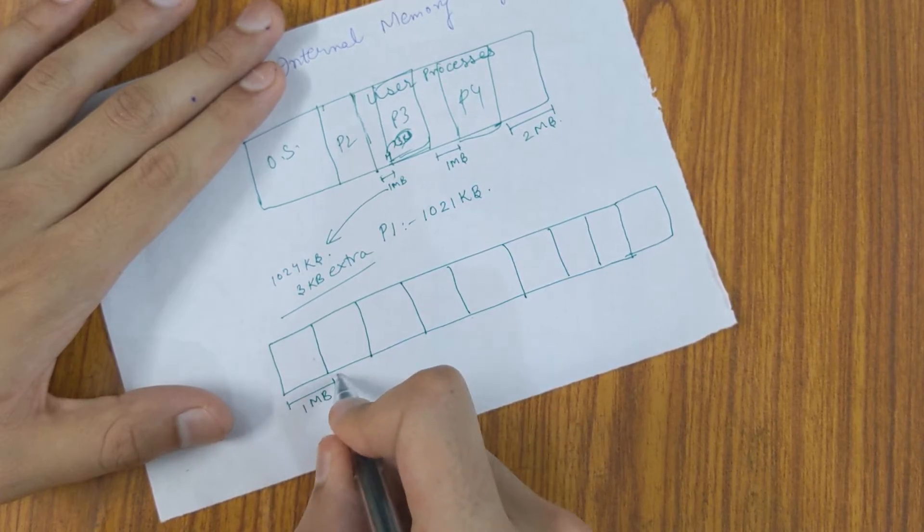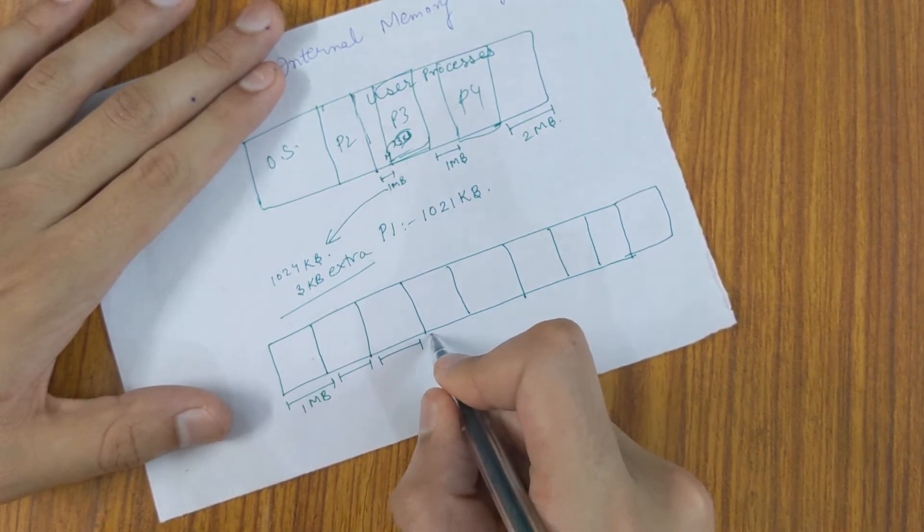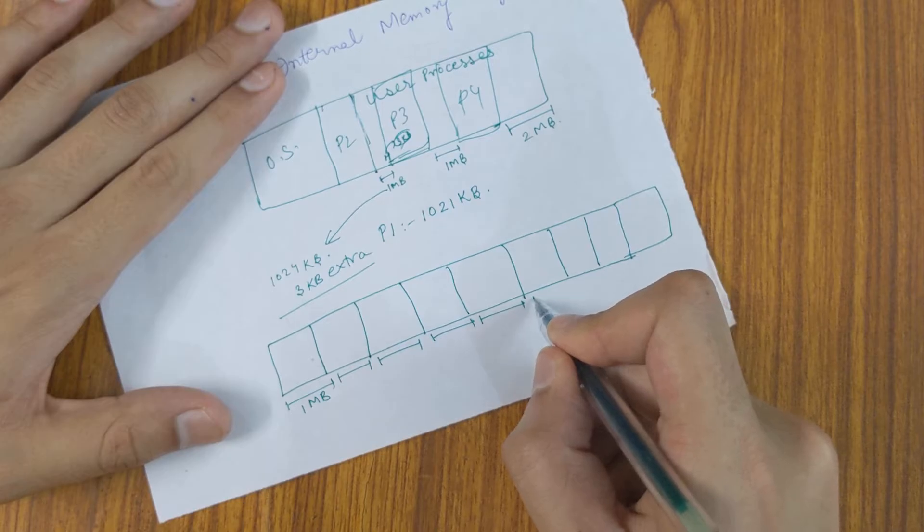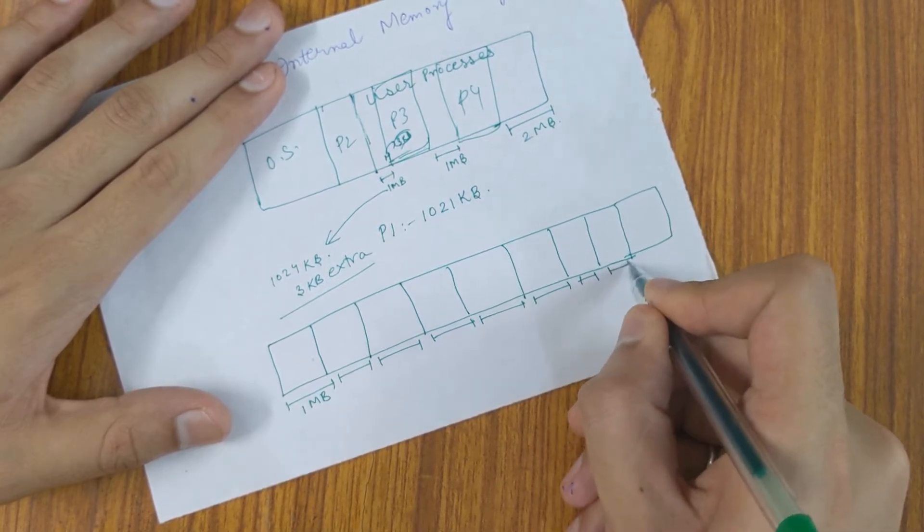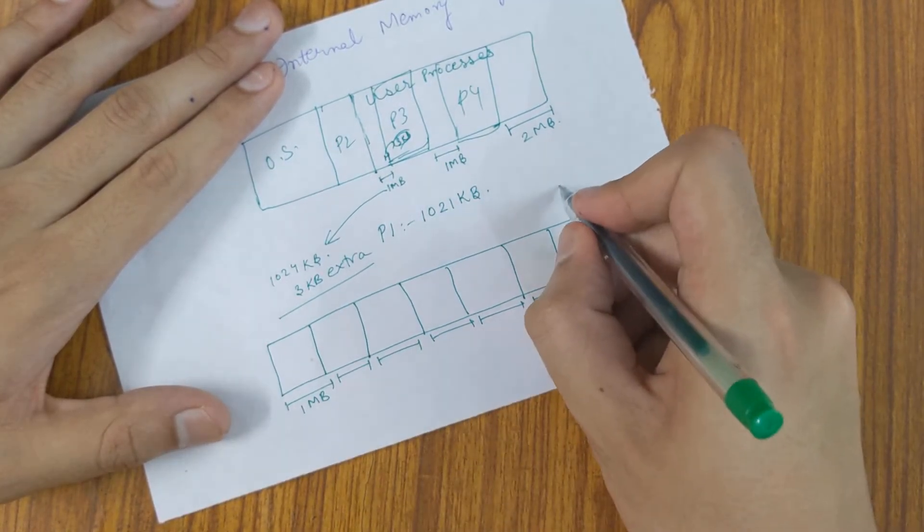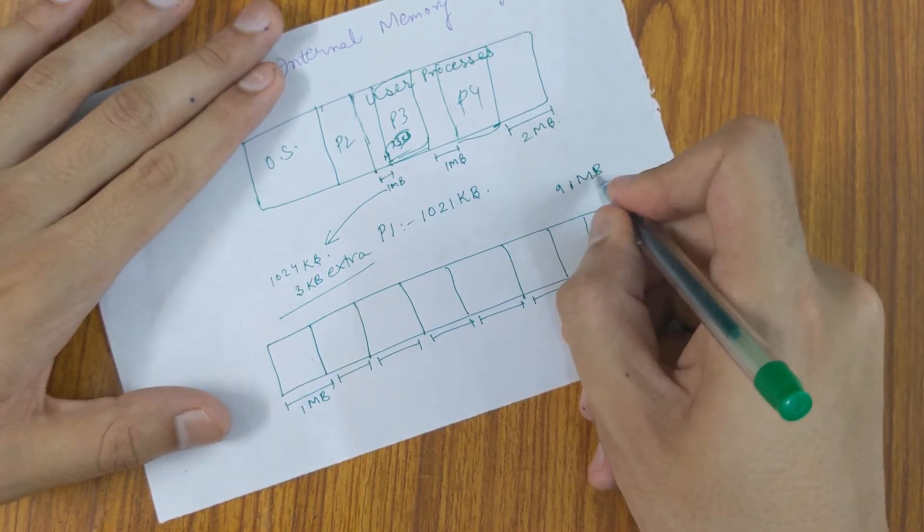Each is 1 MB. 4, 5, 6, 7 and all are 1 MB. So, 9 1 MB holes we have.